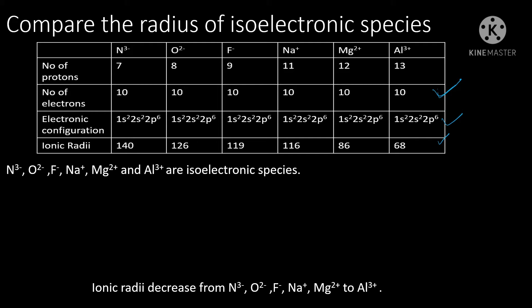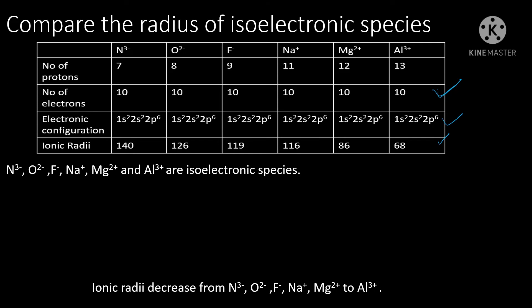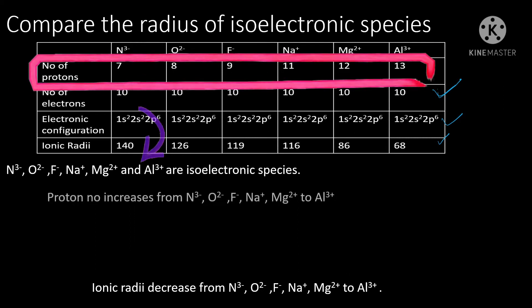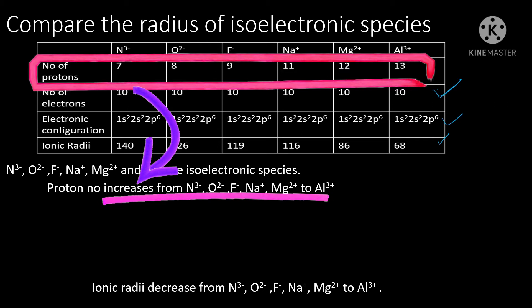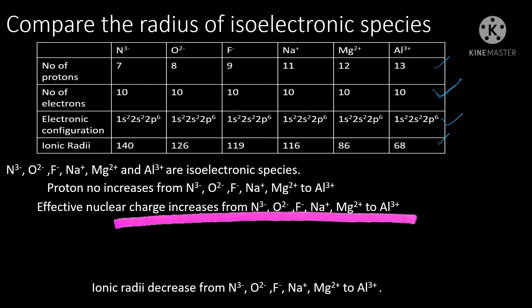The factor that determines their ionic radii, therefore, will be the effective nuclear charge, which is determined by the number of protons present in the species. We can see from the table that the number of protons increases from nitrite ion, oxide ion, fluoride ion, sodium ion, magnesium ion to aluminum ion. As the proton number increases, the effective nuclear charge also increases across this series.